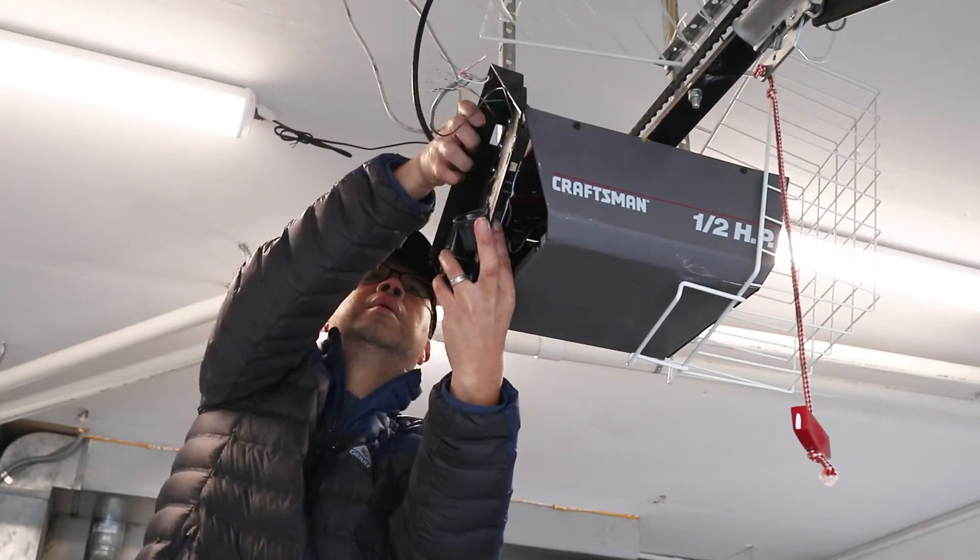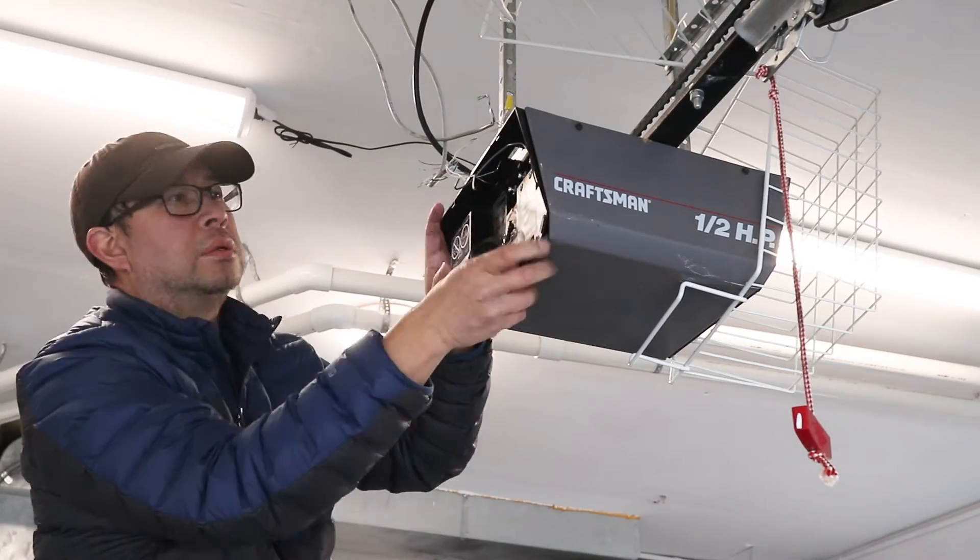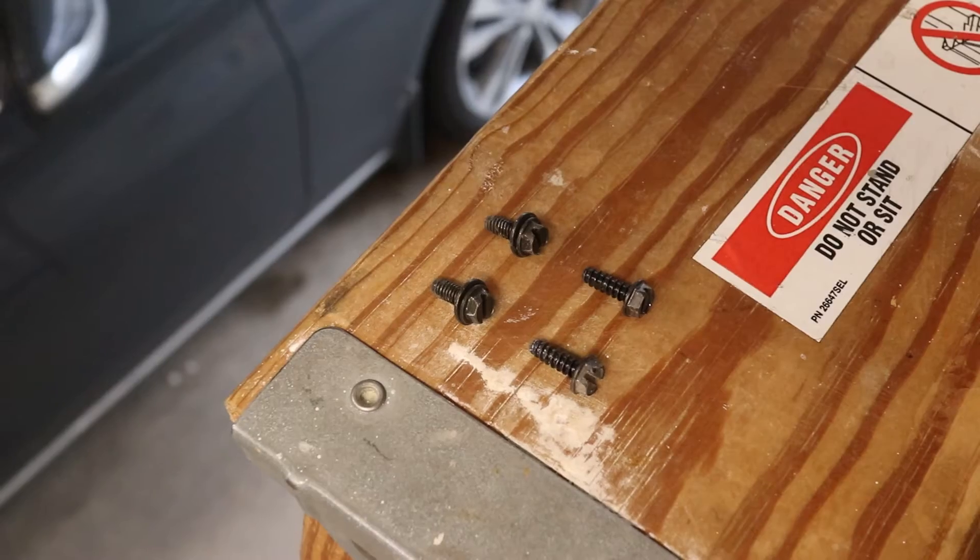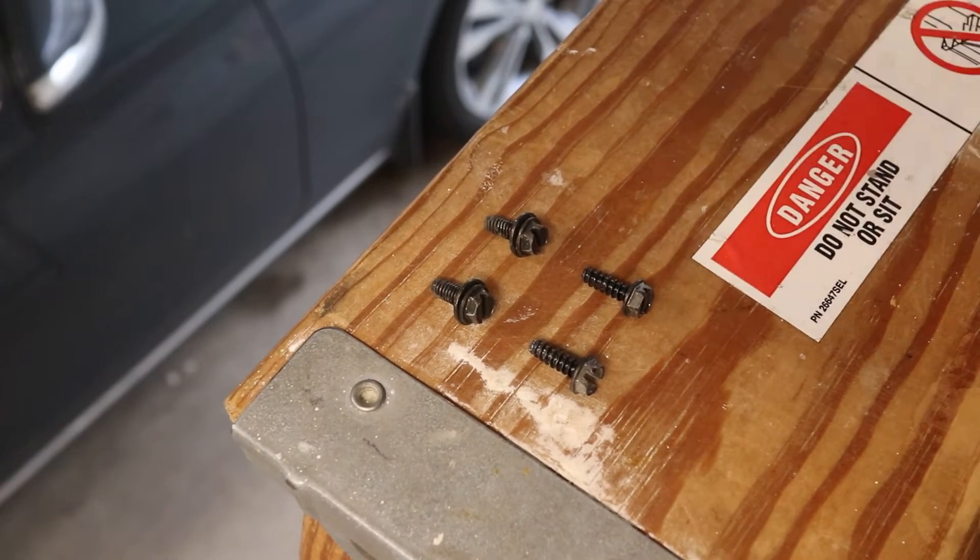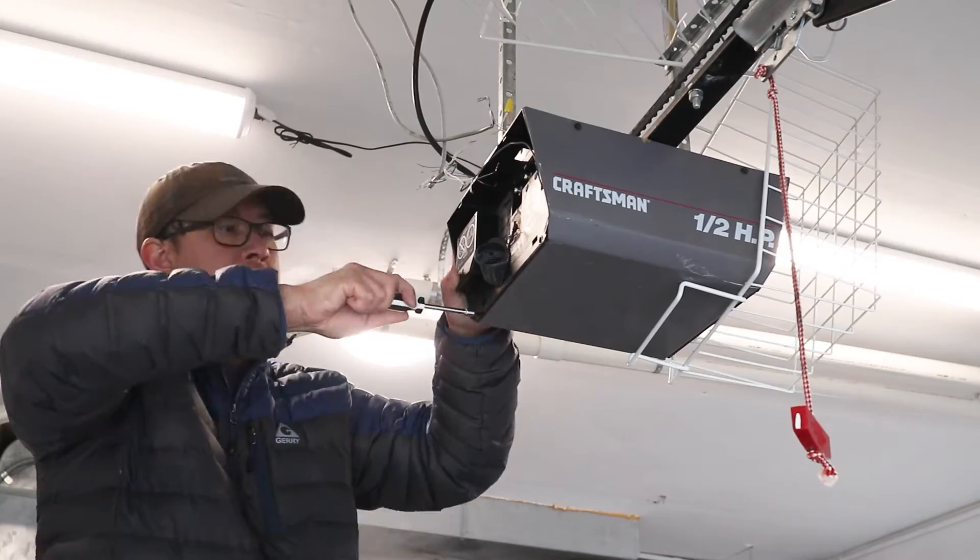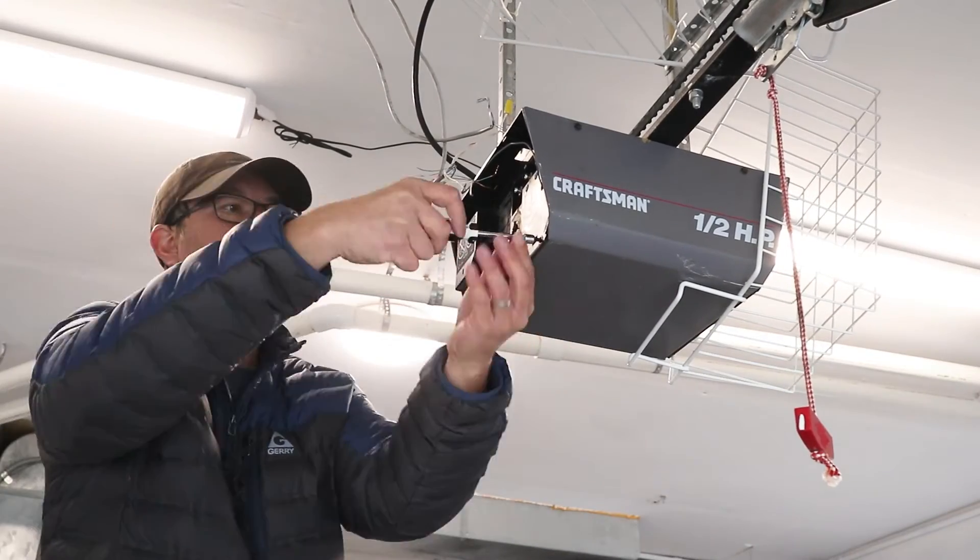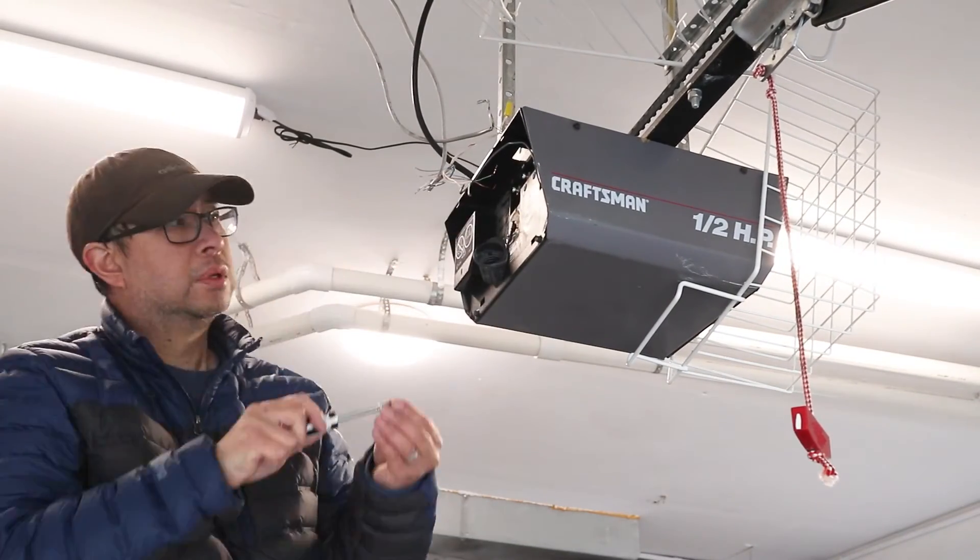Reattaching the faceplate to the motor housing is easy, but the most difficult part is plugging the wire harness back in. As far as the screws go, the shorter ones go up on top and the longer ones go on the bottom. And please stick around because at the end of this video, I'll show you how to reprogram the wireless remote and keypad.